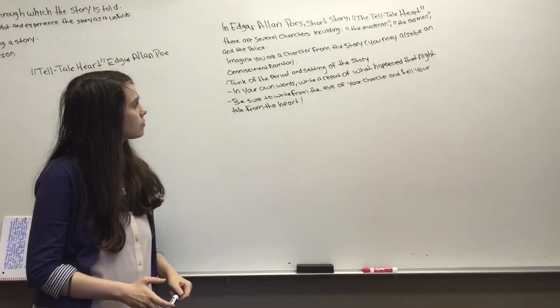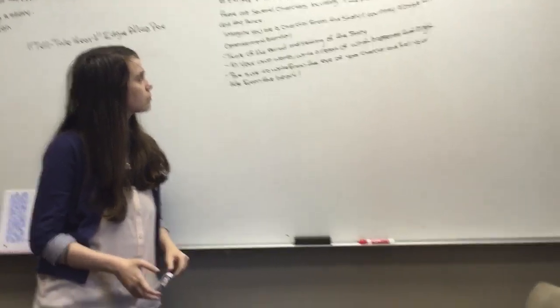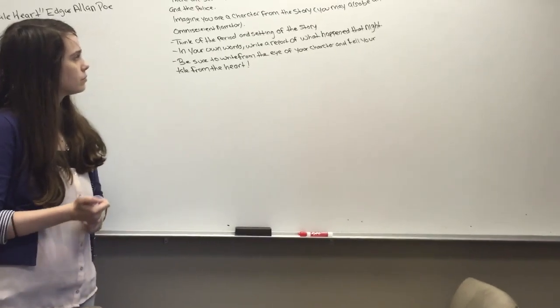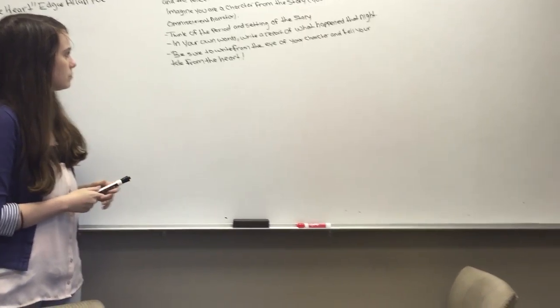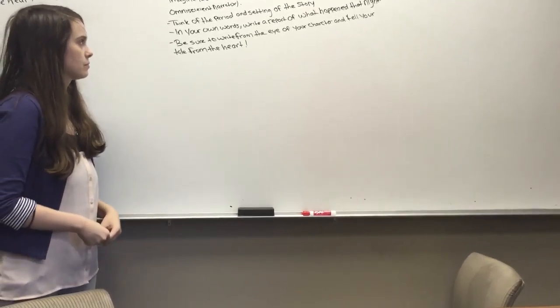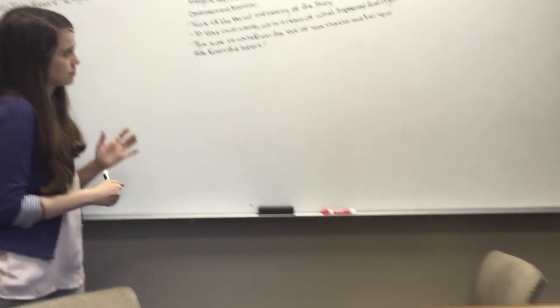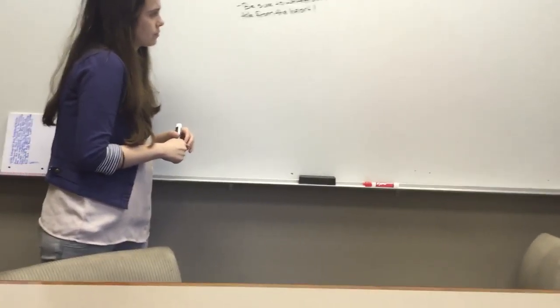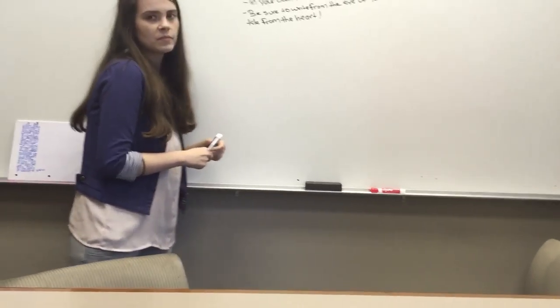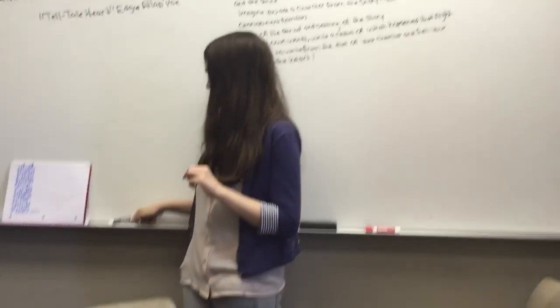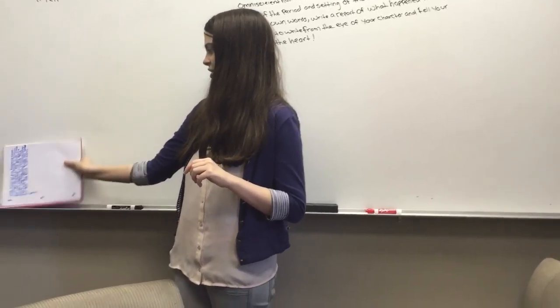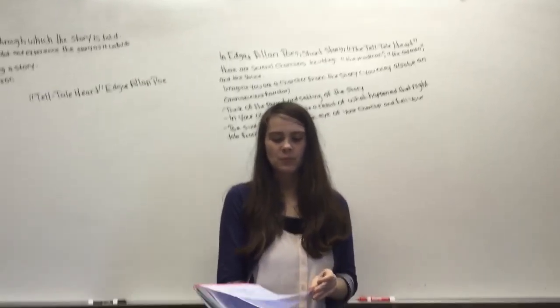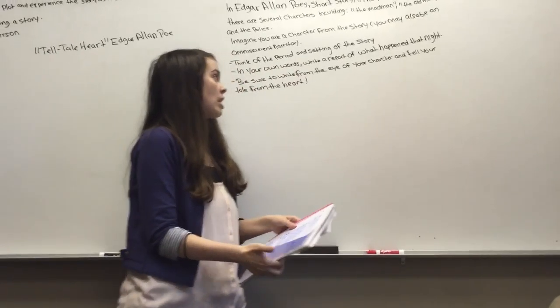Okay, so let's get into our assignment. Can someone please read me what it is we're going to be doing for our practice today? In Edgar Allan Poe's short story, The Telltale Heart, there are several characters including the madman, the old man, and the police. Imagine that you're a character from the story. Think of the period and setting of the story. In your own words, write a report of what happened that night and be sure to write from the eye of your character and tell your tale from the heart. That is excellent.